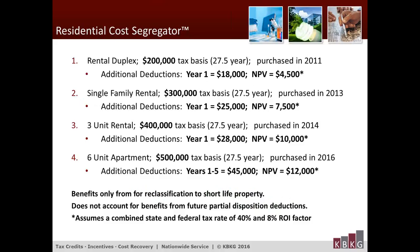To emphasize the types of benefits your client might receive: a rental duplex with a depreciable tax basis of $200,000 purchased in 2011 would receive additional deductions of $18,000 in the first year. A six-unit apartment building with a $500,000 tax basis purchased in 2016 would receive additional deductions of $45,000 in the first five years. Note that these benefits are only from reclassification to short-life property and do not account for additional benefits from future partial disposition deductions.